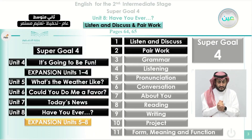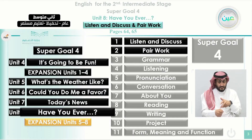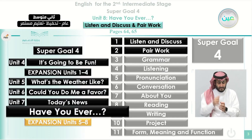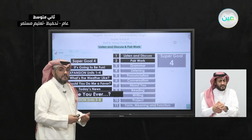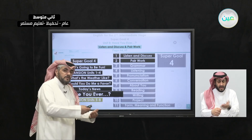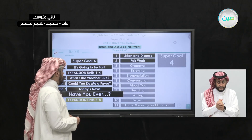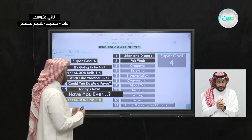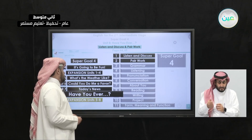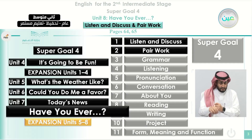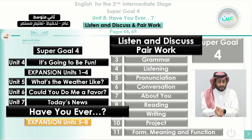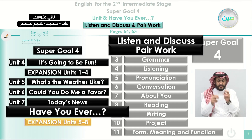We are starting a new unit, that is unit eight, called 'Have You Ever?' The sentence or question in the title is not completed — it should be completed with a verb in the past participle form, as you learn about irregular verbs and regular verbs. In our class today, we're going to read the introduction of the unit by studying section one, 'listen and discuss,' and section two, 'pair work.'